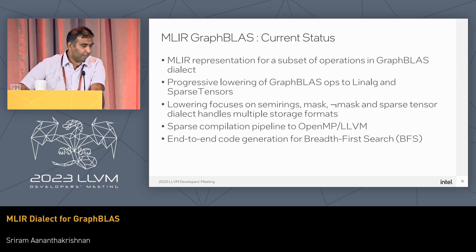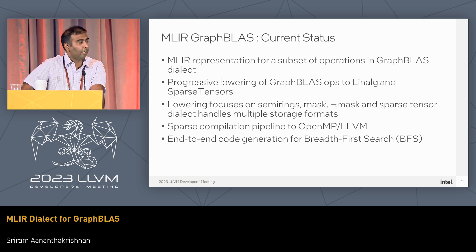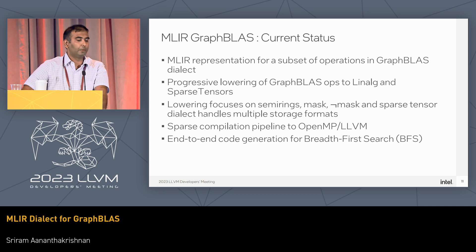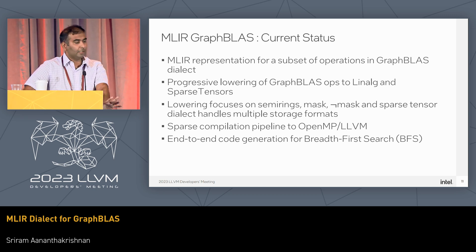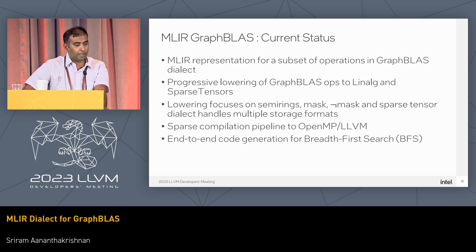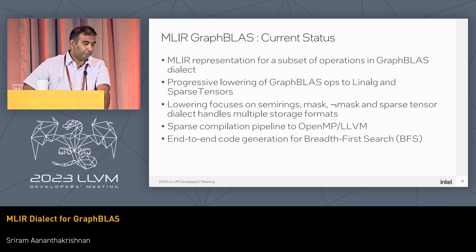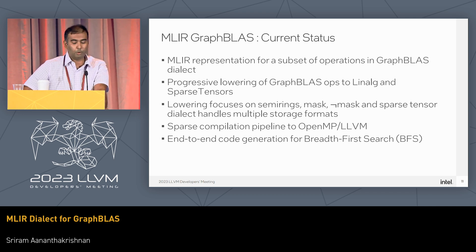We have a subset of operations supported in the GraphBLAS dialect, and we've progressively lowered the GraphBLAS ops to linalg and sparse tensors. Our lowering handles all the different variants due to GraphBLAS semirings, masks, and complements, while sparse tensor handles the different storage formats. We also adapted the sparse compilation pipeline to lower to OpenMP with LLVM. Putting this all together, we have end-to-end code generation for BFS that runs on Xeon CPUs with OpenMP.